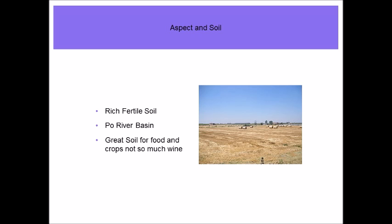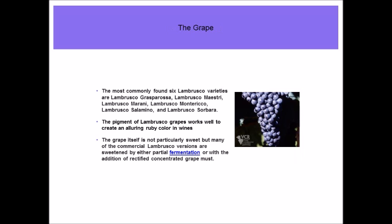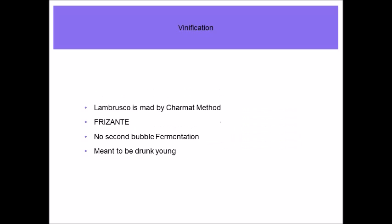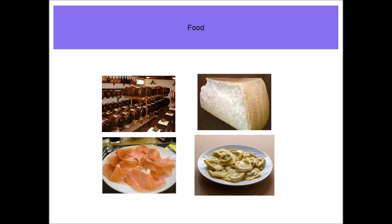Vinification of Veneto: lots of wine styles — sparkling Prosecco, white Soave, red Valpolicella, sweet wines, and the appassimento process of drying grapes on straw mats.